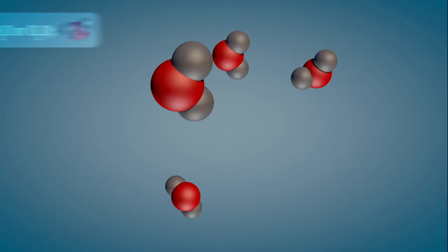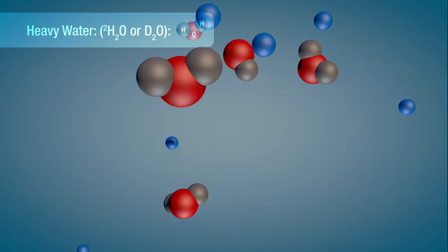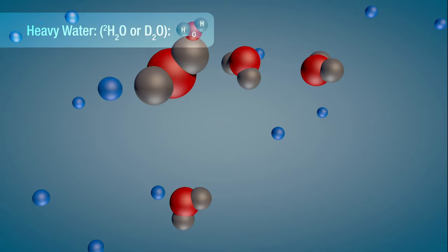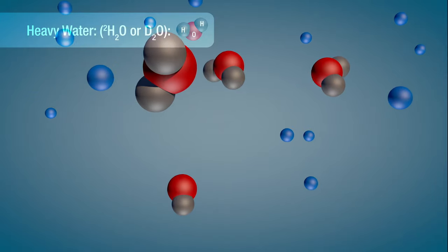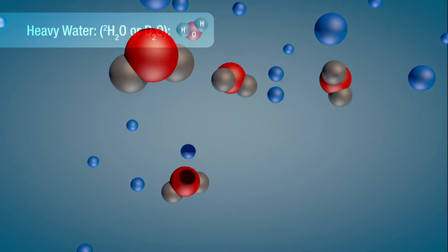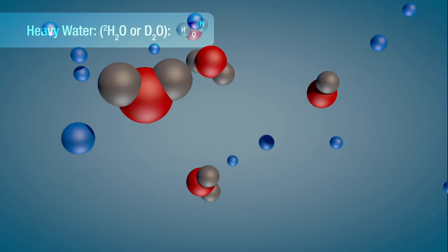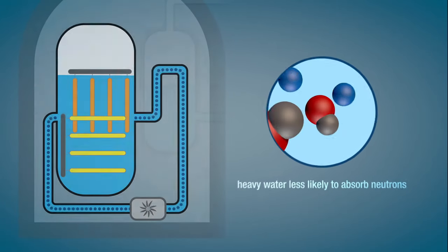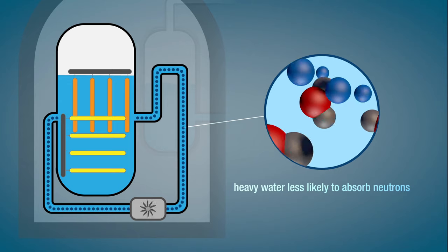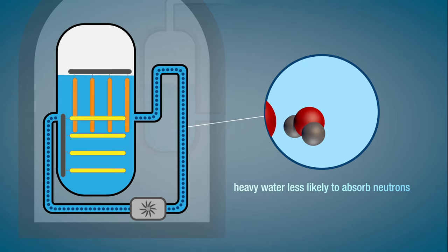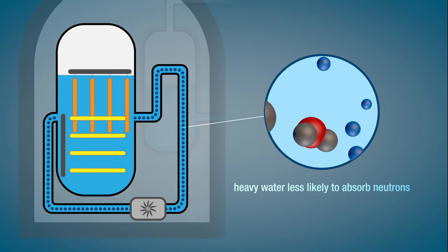Heavy water comes to the rescue. Heavy water contains a different form of hydrogen called deuterium that already has one neutron. Heavy water is much less likely to absorb free neutrons. When heavy water is piped through the fuel channels, it absorbs heat but does not slow the reaction process nearly as much as normal water.